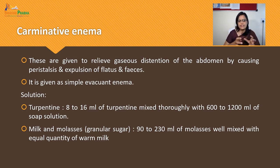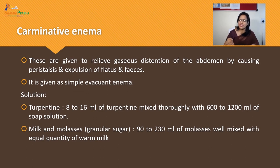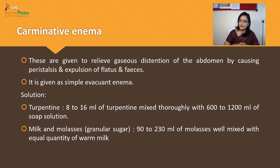Carminative Enema is given to relieve gaseous distension of the abdomen by causing peristalsis and expulsion of flatus. It is used as a simple evacuant to relieve gas distension in the abdomen. It is generally used for infants below six months of age. The solution is turpentine 8 to 16 ml mixed well with 600 to 1200 ml of soap solution, or milk and molasses — 90 to 230 ml of molasses well mixed with an equal quantity of warm milk.